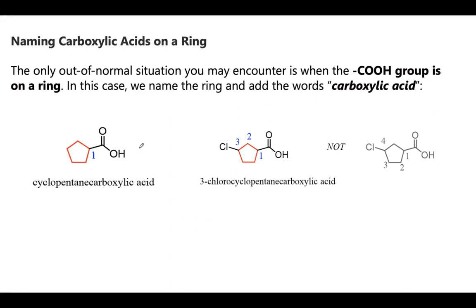For carboxylic acids on a ring, there's a slight difference — you use the term 'carboxylic acid' in the name. For example, a cyclopentane ring attached to a carboxyl group is named cyclopentane carboxylic acid. When there are more substituents on the ring, you number it so that the carboxyl group gets the lowest number. For instance, if chlorine is at position three, the name would be 3-chlorocyclopentane carboxylic acid.